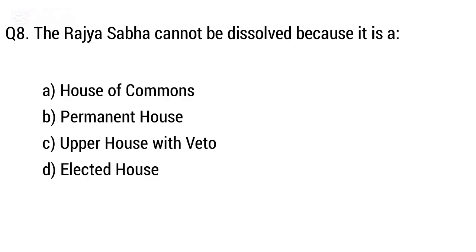Question 8: The Rajya Sabha cannot be dissolved because it is a? The right answer is option B: Permanent House.